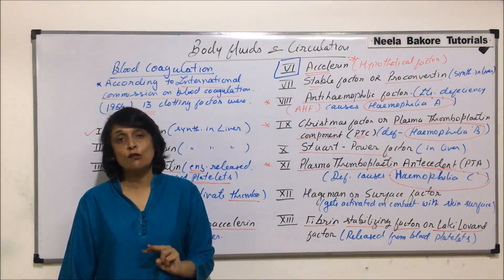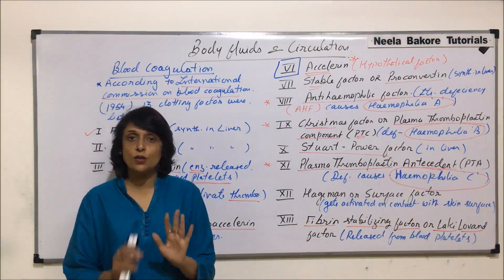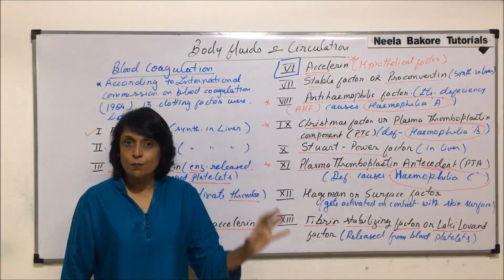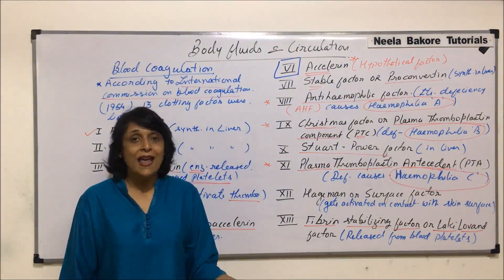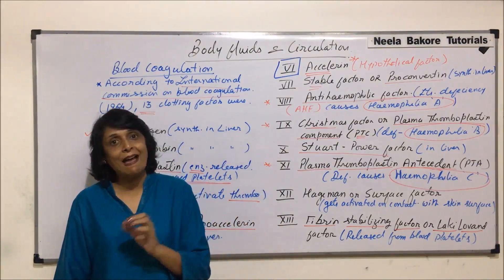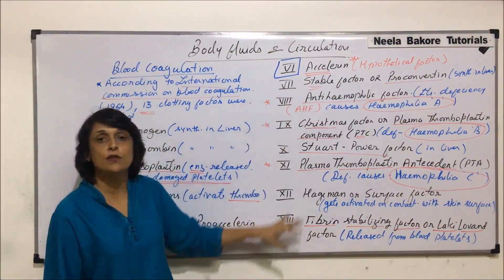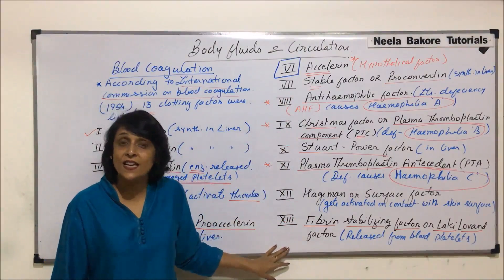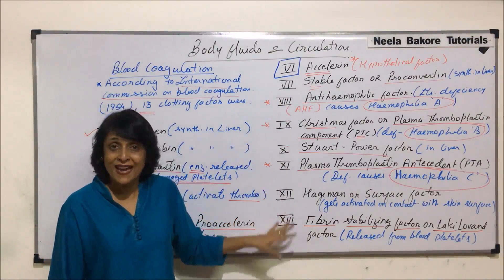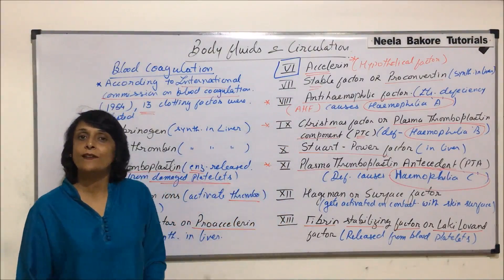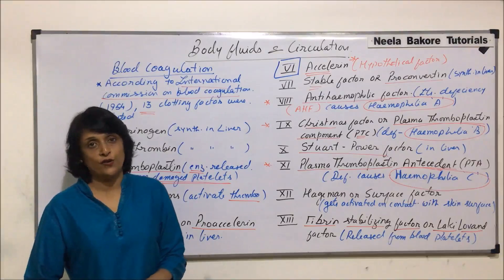In the next segment we will talk about the actual clotting procedure. We will discuss it in two parts: a simpler method first, and then the actual method showing the cascade mechanism in which all 13 factors work.